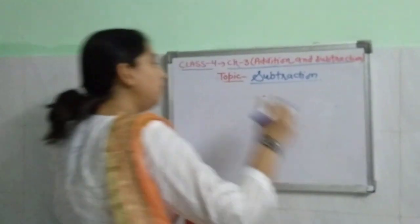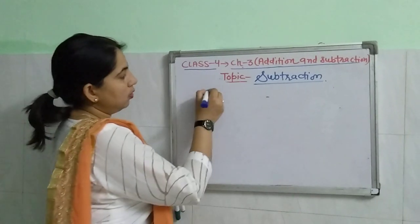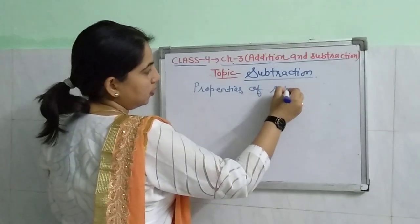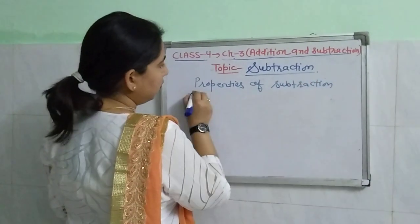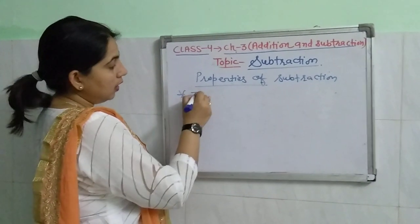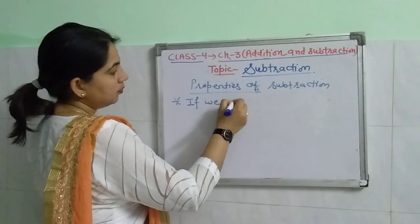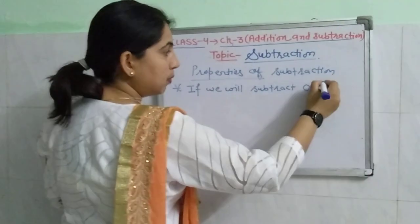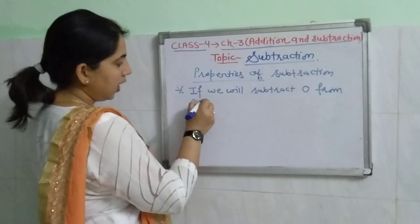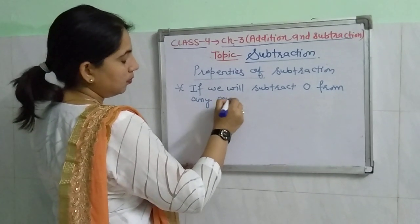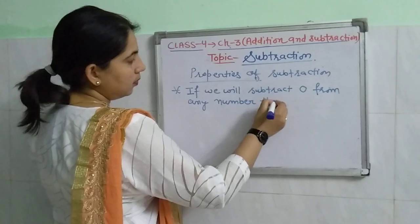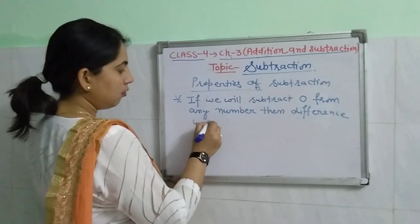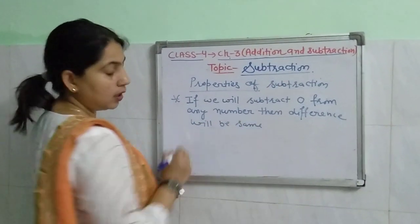Now I will tell you some properties of subtraction. First property: if we subtract 0 from any number, then the difference may be the same.